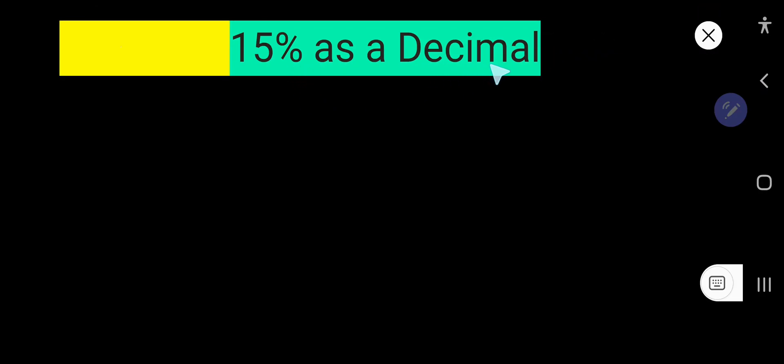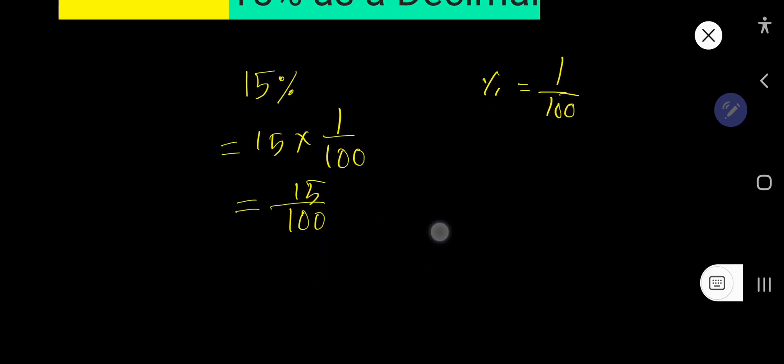15% as a decimal. In this video, you will learn how to convert 15% to decimal. Percent means 1 over 100, that is out of 100. So 15% means 15 times 1 over 100. We can also rewrite this as 15 divided by 100.